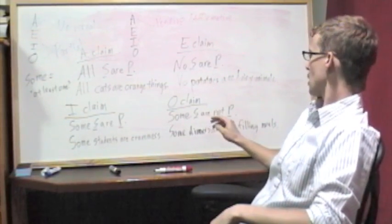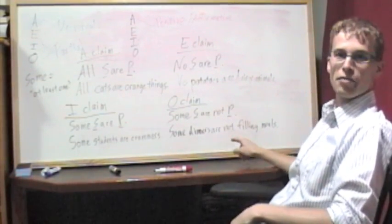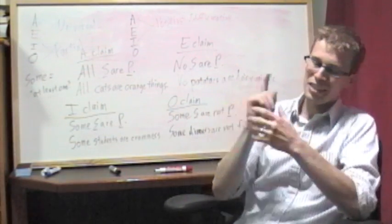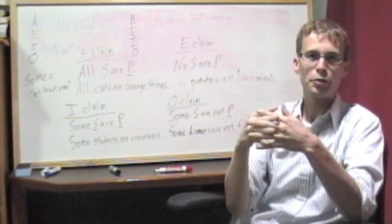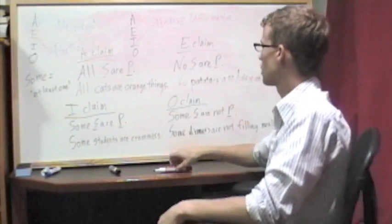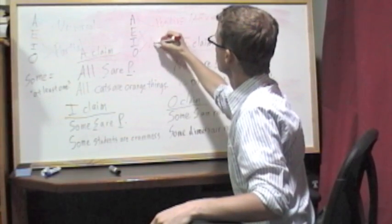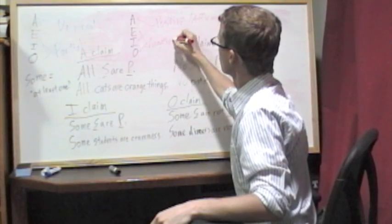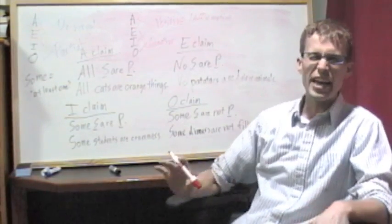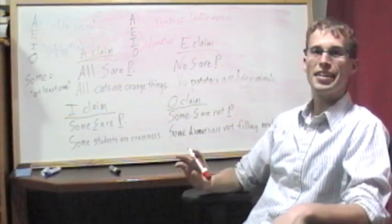For an O claim, some dinners are not filling meals. For that one, we're saying that there's at least one thing that's not in that intersection between the two classes. So there's some negation there. So it's considered negative.